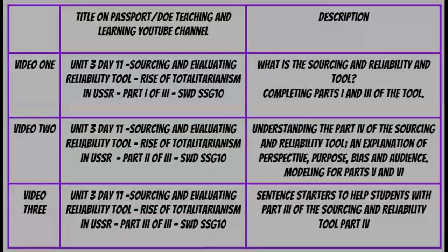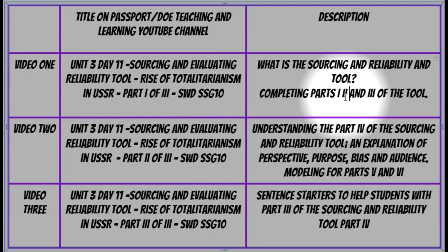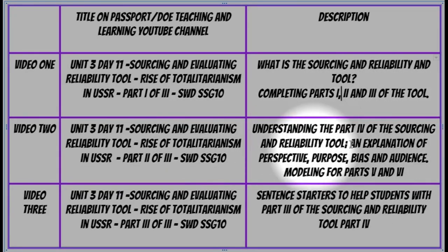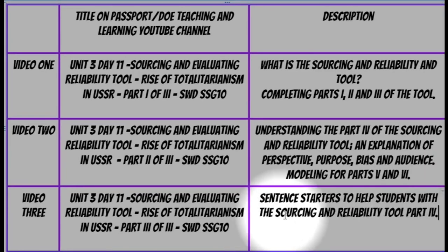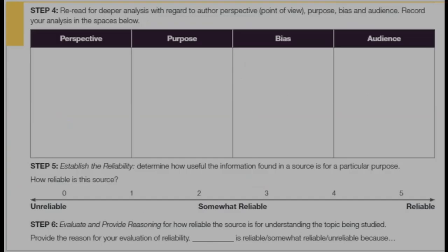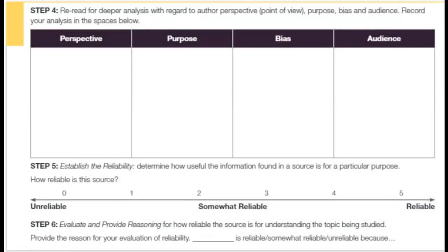In this video we specifically focused on the sourcing and reliability tool and worked on Parts 1, 2, and 3. In the next video we're going to work on Part 4, which comes with an explanation of perspective, purpose, bias, and audience — what they are, how we work with them — and we'll model Parts 5 and 6. The last part will cover sentence starters to help you with the tool. Don't let perspective, purpose, bias, and audience intimidate you — you're prepared. You're watching this video, which means you're on the right track. Have an awesome day!